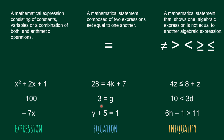For example, 3 equals g. If you substitute the value of g as 3, it becomes 3 equals 3. That is how evaluation works — you need to find the value of the missing variable. Another example: y plus 5 equals 1. We are looking for the value of y. That is called an equation.